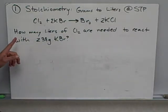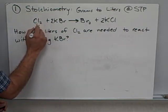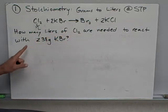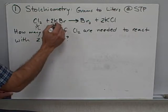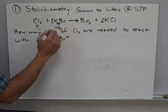This question says how many liters of Cl2 are needed to react with 238 grams of potassium bromide. So I've got 238 grams of this.